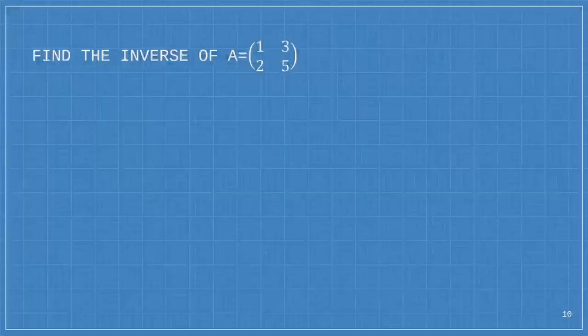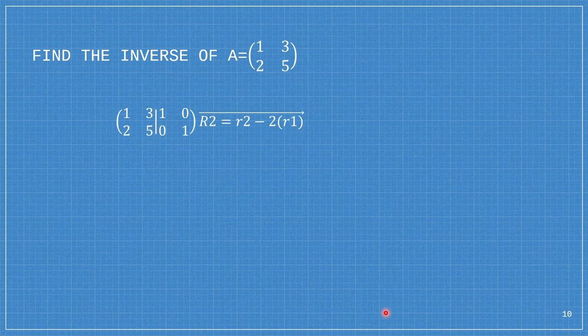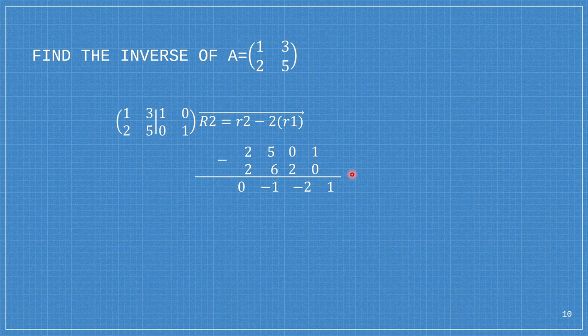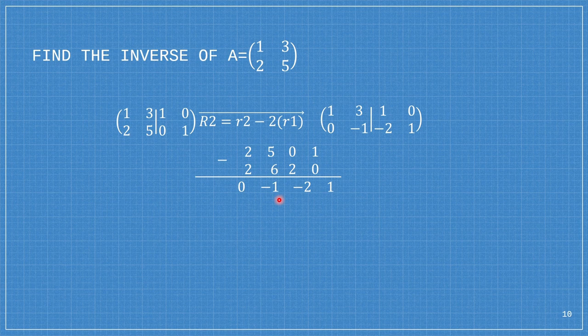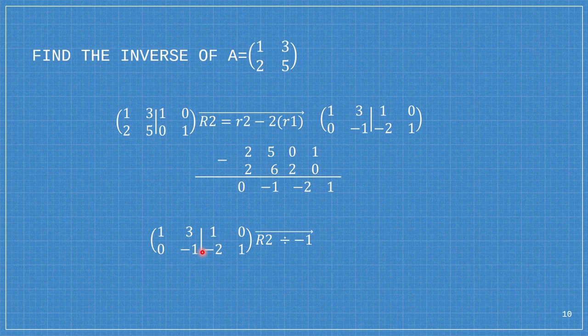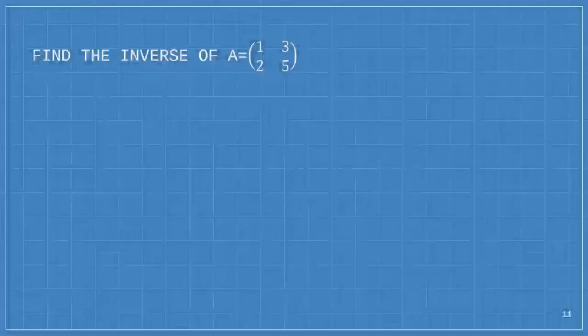Next problem: find the inverse of A. Since we have 1 here, our next step is to make this into 0, following R2 minus 2 times row 1. 2 minus 2 is 0, 5 minus 6 is negative 1, 0 minus 2 is negative 2, 1 minus 0 is 1. We replace row 2 by this. Then we divide row 2 by negative 1, giving us 0, positive 1, positive 2, and negative 1.